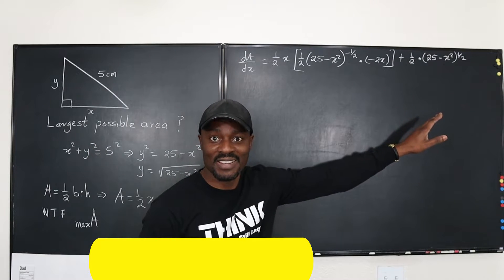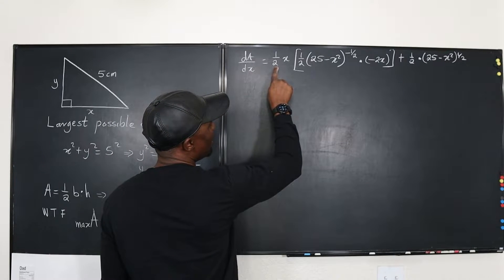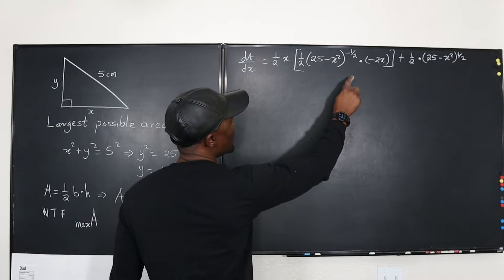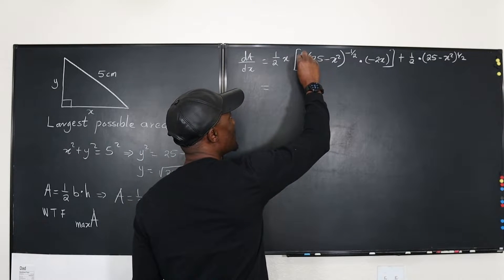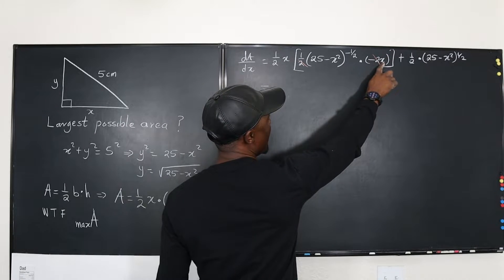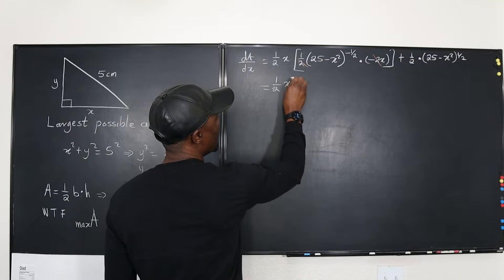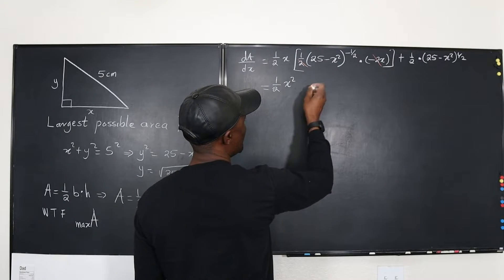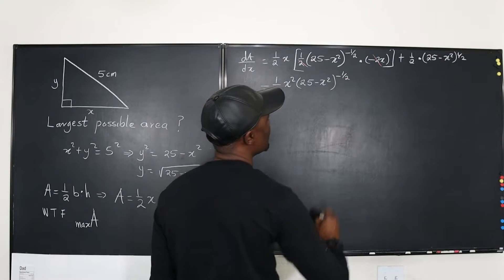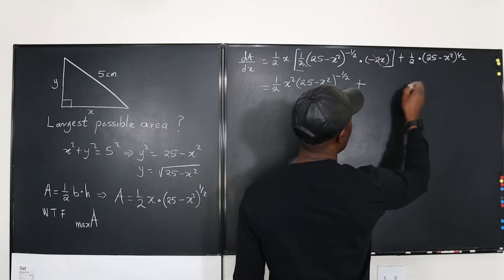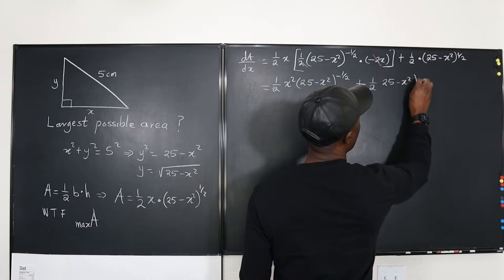The calculus is done — this is where most people get stuck: in the cleanup. The two's will cancel, so from the first part we get negative x squared times (25 minus x squared)^(negative one half), and the half remains. From the second part we just have one half of (25 minus x squared)^(1/2).